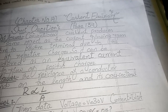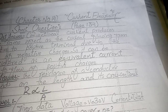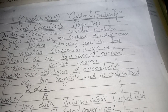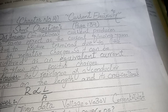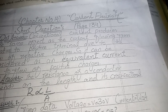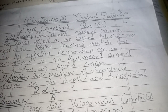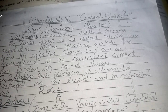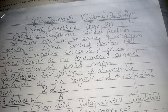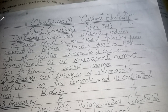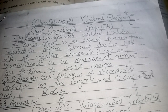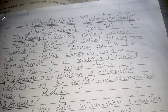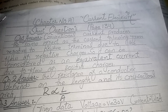Question 1: Why is conventional current considered as an equivalent to electronic current? In the beginning of physics, electric current was defined as the flow of charges from the positive to negative terminal of the battery, and this was termed as conventional current.